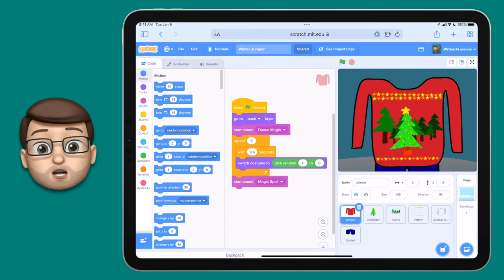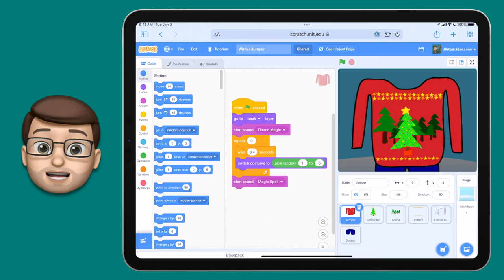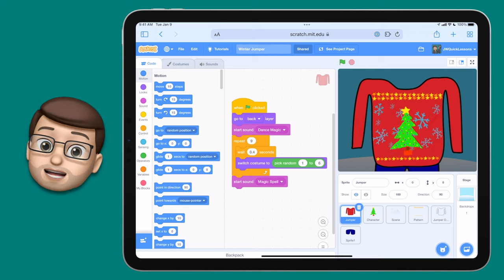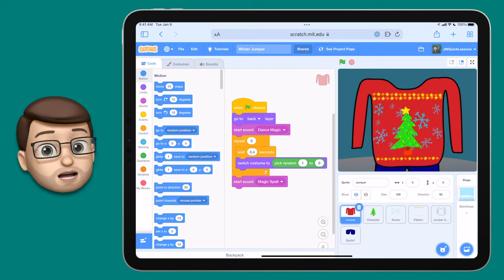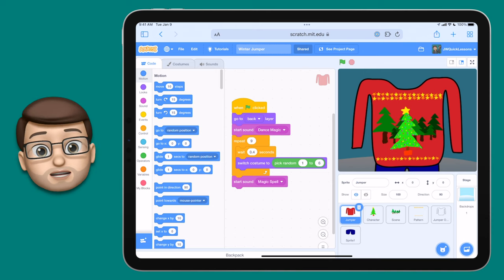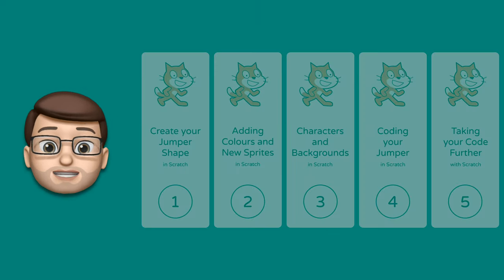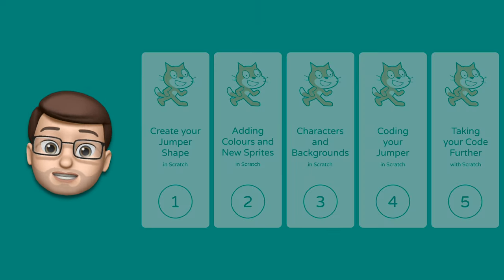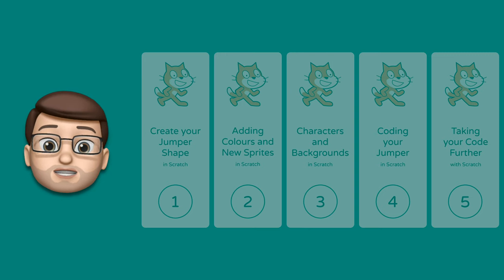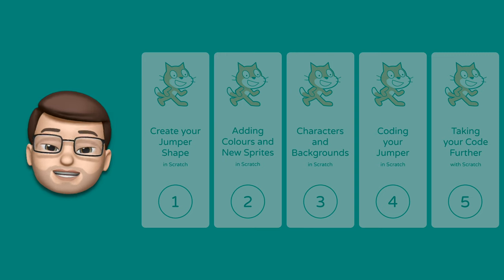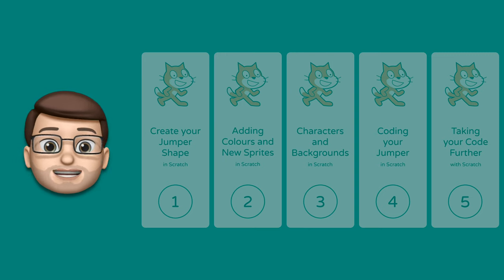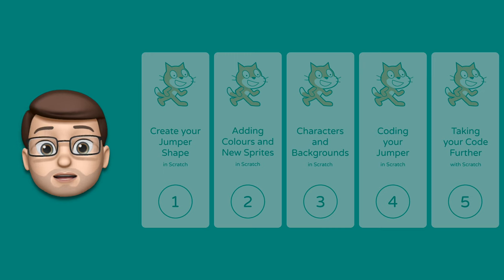If you're looking at this and thinking, well Jacob that's really cool but there's no way I can work out how to make that or write the code, then don't panic — I've got you. There are going to be five steps in this video and you can pause after each one so you too can create your own randomised winter jumper.